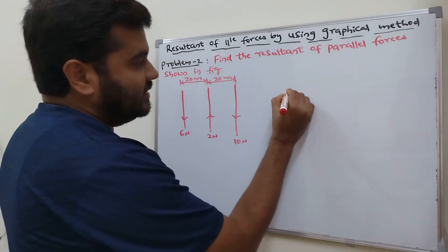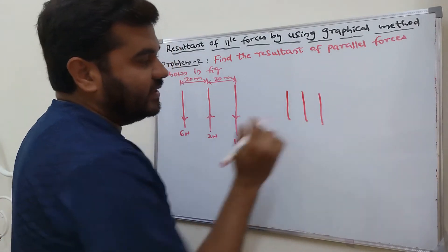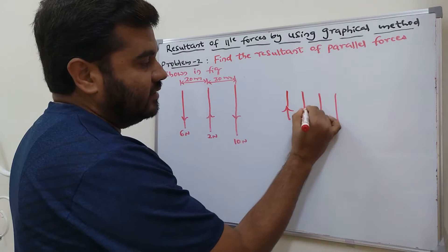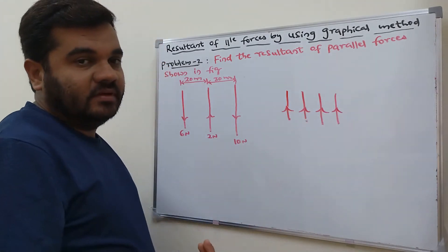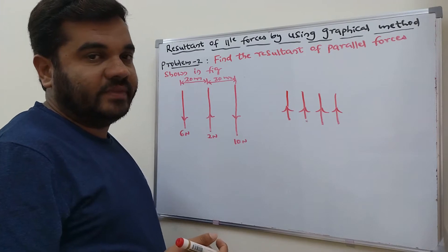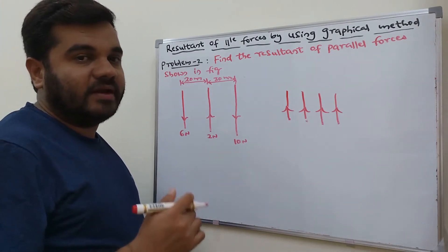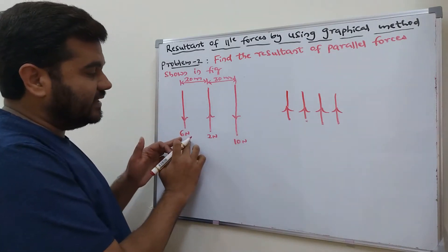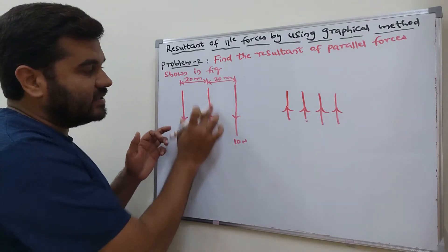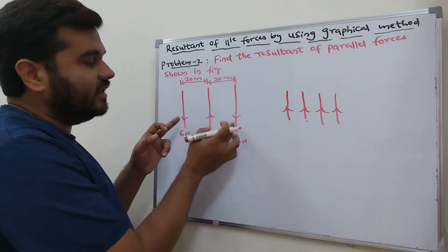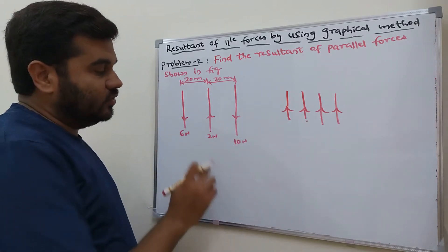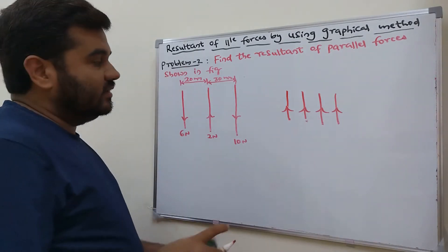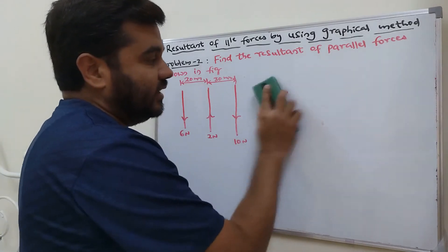Like parallel forces are those where the lines of action are parallel to each other and the directions are also the same — either both upward or both downward. In the case of unlike parallel forces, the lines of action are parallel to each other but the directions are different. In this problem, we are finding the resultant of three parallel unlike forces.